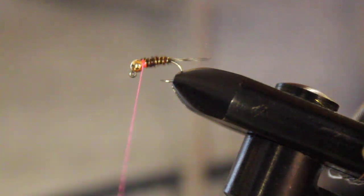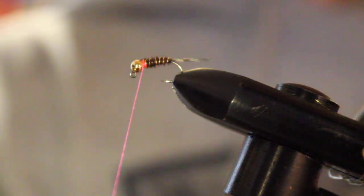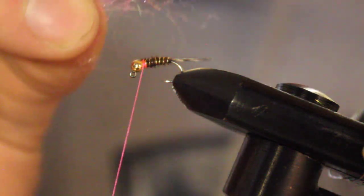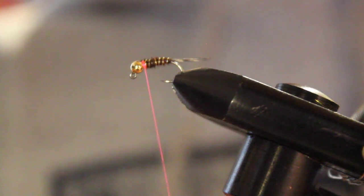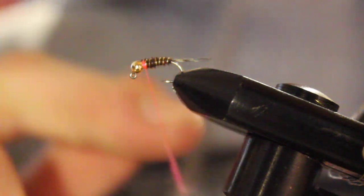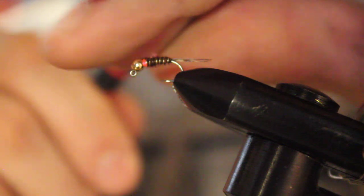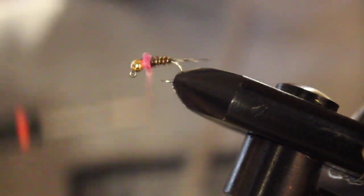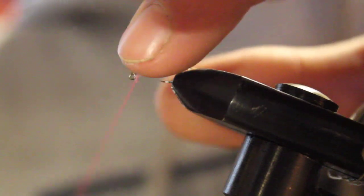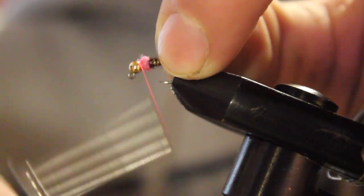Now we are going to take our south scud dubbing. I like south scud dubbing just because I think it dubs easier than an ice dub, but you can use either one. Just a small pinch. Take it and just dub a noodle onto your tying thread. Make sure to leave a little bit of room right behind the eye for your hot spot or your pink thread collar. We are going to wrap that, then we are going to start making wraps behind the eye to build up a little collar.